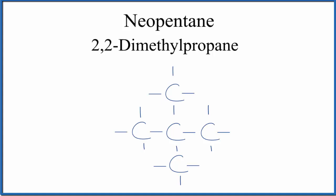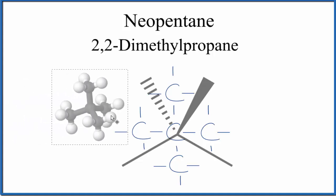You could also write it as a skeletal formula and even show some of the three dimensionality. Here we have our carbon in the center, and then there'd be a methyl group at the end of each one of these. If we look at a molecular model for neopentane to really see it in 3D, it looks like this.